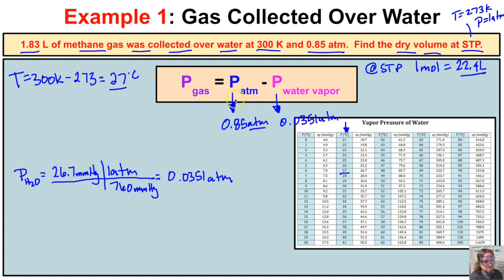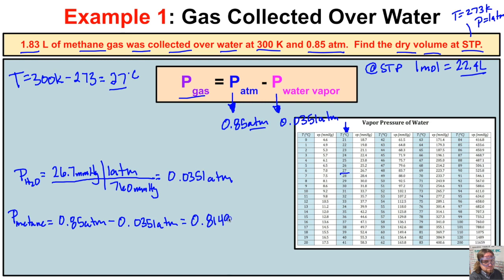To get the pressure of the methane gas, we take the atmospheric pressure minus the water vapor pressure: 0.85 atm − 0.0351 atm = 0.8149 atmospheres. This is the pressure of the dry methane gas, but it is not our final answer.